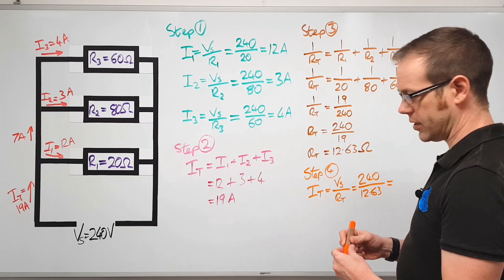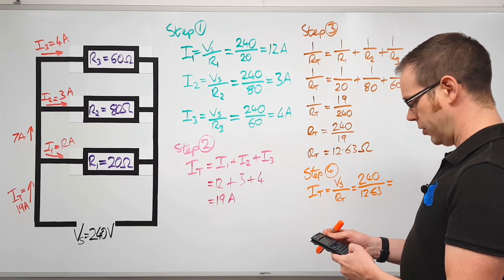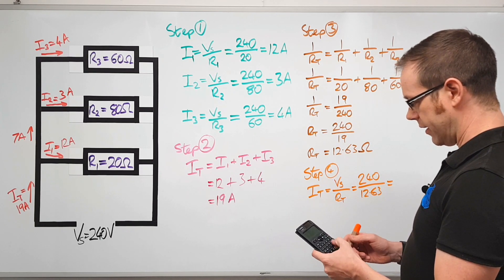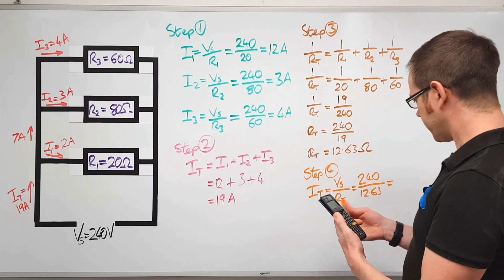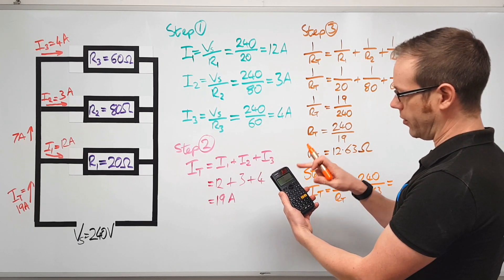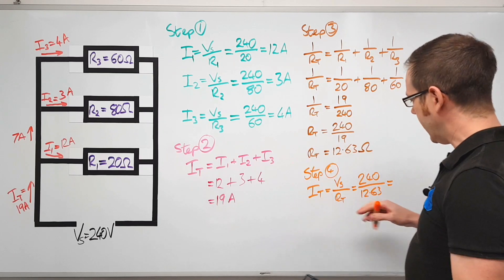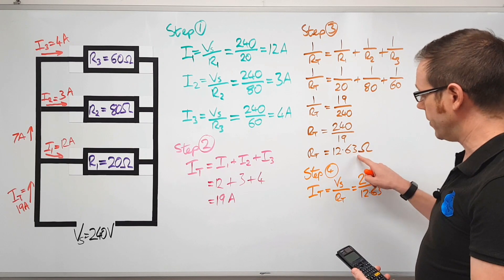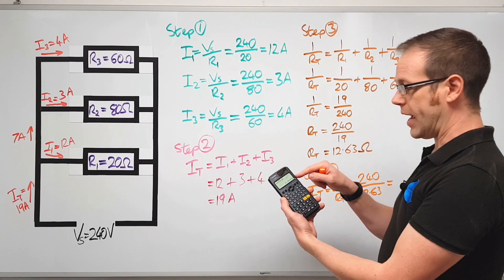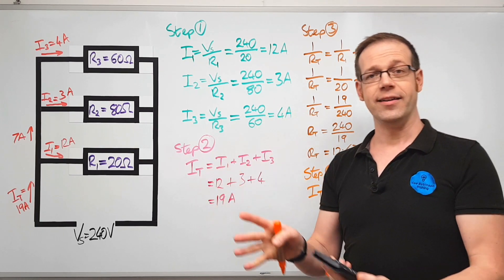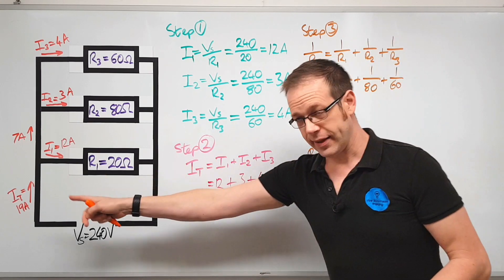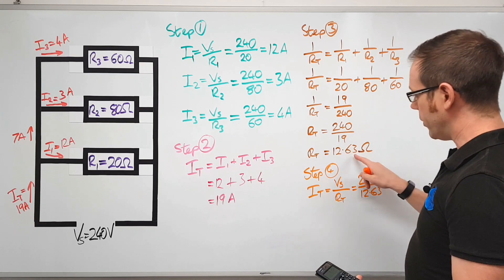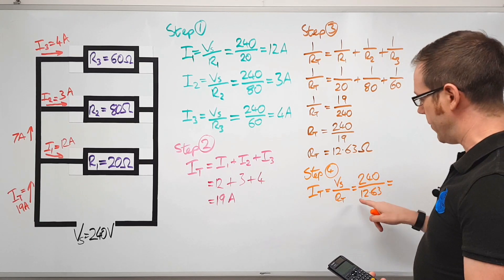Now we're going to notice something interesting at this point. When we put this into the calculator, 240 divided by 12.63 is going to give us, when we press the SD button, 19.0023753. Now if at this point we were to put in all of those decimal points that we locked off in the earlier answer that we locked off here, what we'd find is that that answer would be exactly 19, which is exactly the amount of current that we've got flowing into the circuit. The reason that we've got those extra numbers there is that we've lost a little bit of accuracy here which has impacted on the answer here.